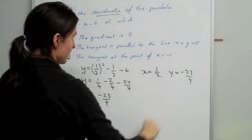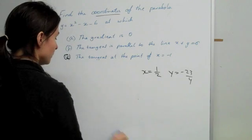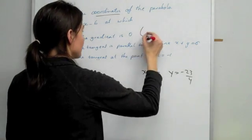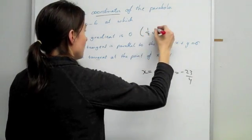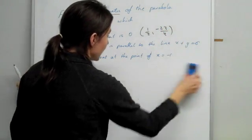You can put it in coordinate form by going x bracket, x comma y. So it looks like this particular answer is going to be (1/2, -23/4). Over 4, sorry.